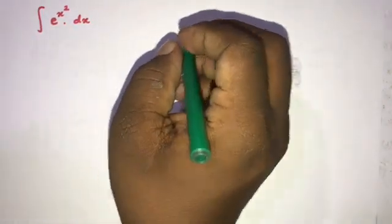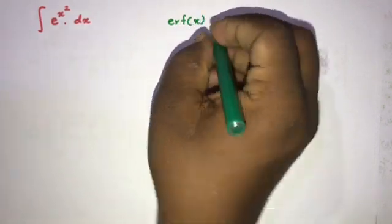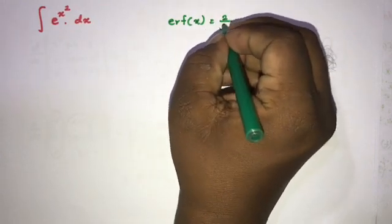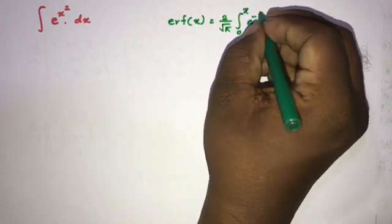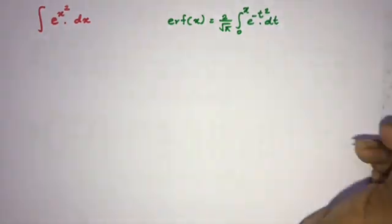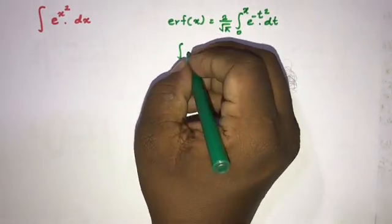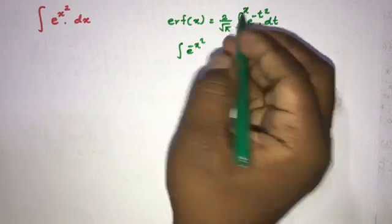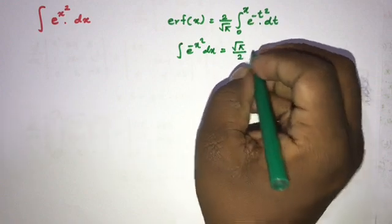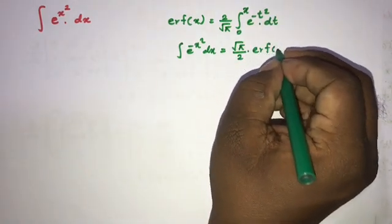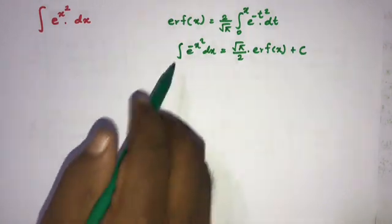We know erf(x) is equal to 2 over square root of pi, times the integral from 0 to x of e to the minus t squared dt. Also, the integral of e to the minus x squared dx equals square root of pi over 2 times erf(x) plus c.